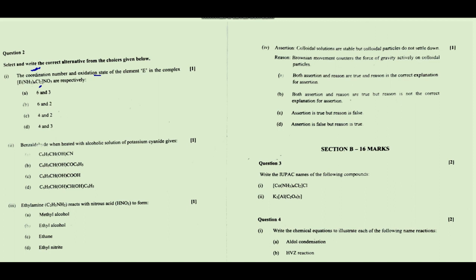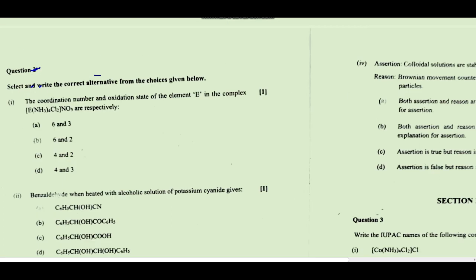For the coordination complex, we have to find the coordination number and oxidation state. Two chlorine and four ammonium — coordination number is six, so either option A or B. Now checking the oxidation number: suppose the oxidation state of the metal is x, then x plus two chloride (minus two) equals plus one, because nitrate is minus one. So x equals plus three. Option A is correct.